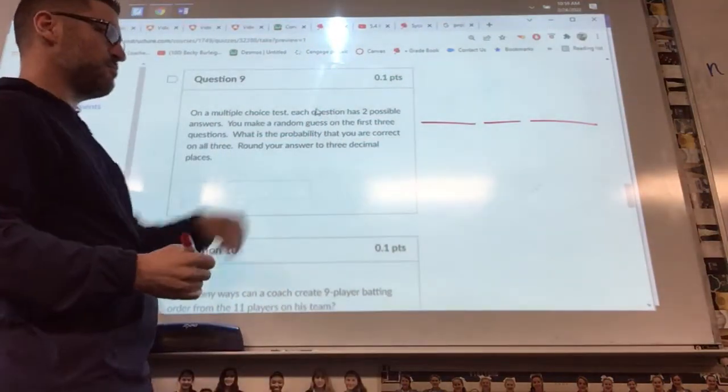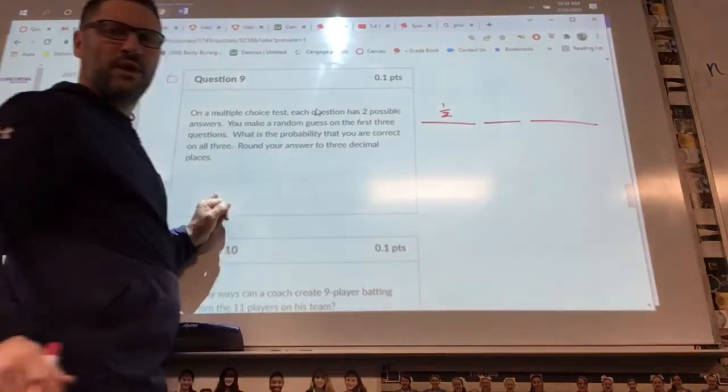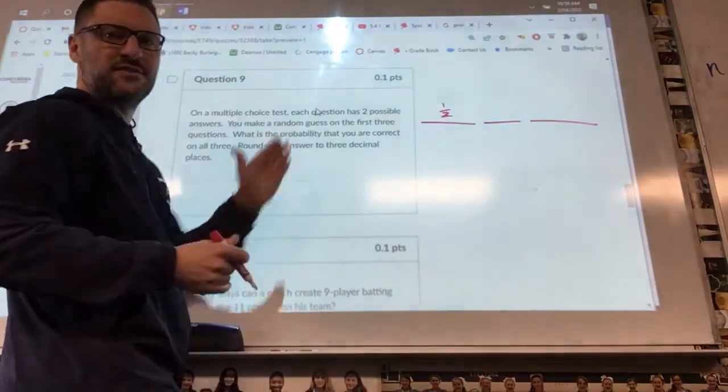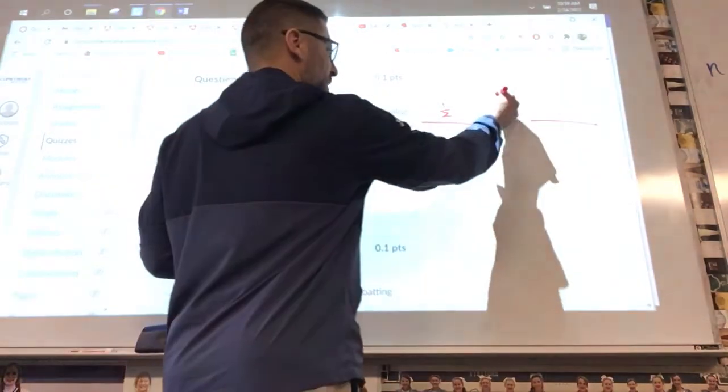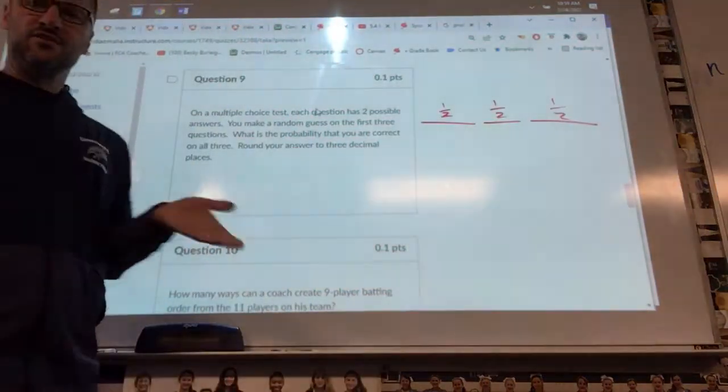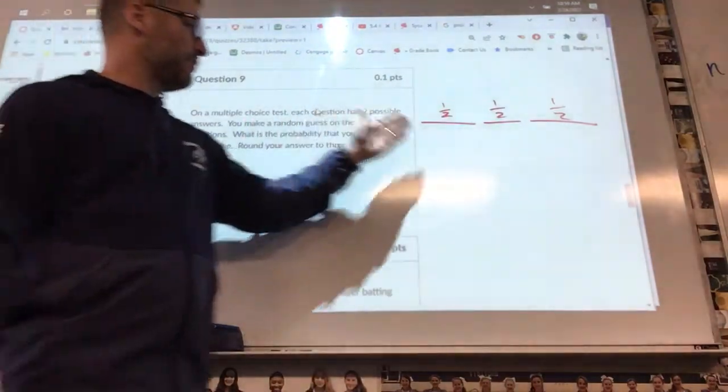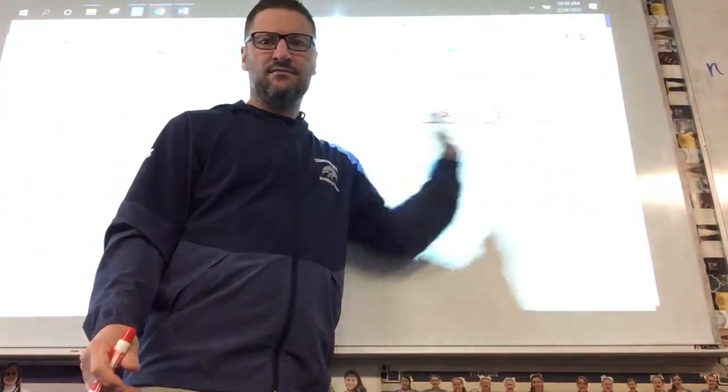This one has two possible answers, so I have three blanks and there's two possible answers. So the probability I would get this one right would be one in two. I'd have a one in two chance. So I have one in two, one in two, and one in two on this. Depending on your form, those might be different, but I want to get it right and right and right. So you should be able to do that one.